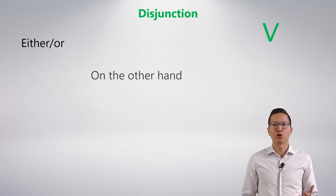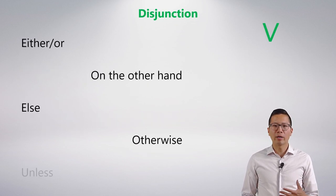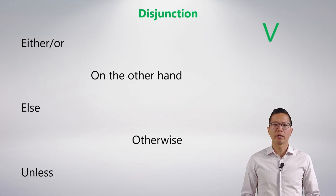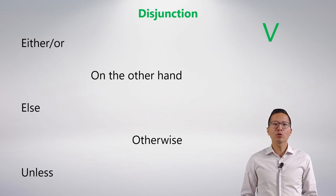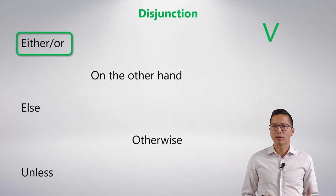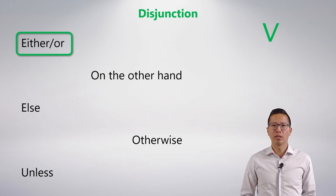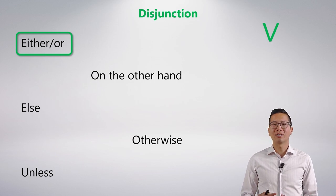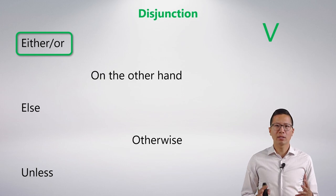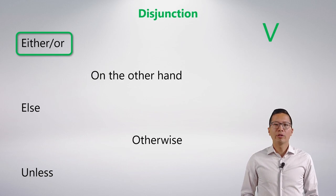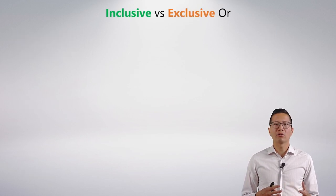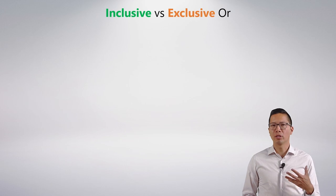Here are some stylistic variants for the disjunction: either/or, on the other hand, else, otherwise, and unless. A couple of these are a bit problematic, so we're going to zero in and spend time understanding two of them. The first one is 'either or.' You might think that 'either or' means something different than just 'or,' but I've just told you that 'either or' is a stylistic variant of the disjunction, which means they mean the same thing. The difference seems to hinge on the understanding of inclusive versus exclusive or.